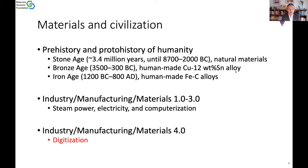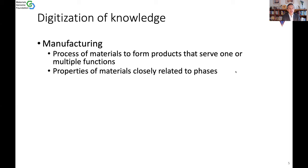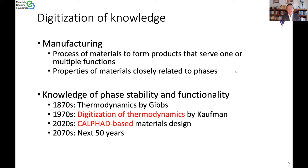Now we're in the fourth industrial revolution, where manufacturing and materials all come together in digitization. If you look at the digitization of knowledge for materials particularly, the whole industry is manufacturing — you process materials to form products that serve one or multiple functions. The key are the product materials, controlled by the phases we have. So the knowledge of phase stability becomes very important in all manufacturing, even going back to the Bronze Age, the Iron Age, and the blacksmiths.